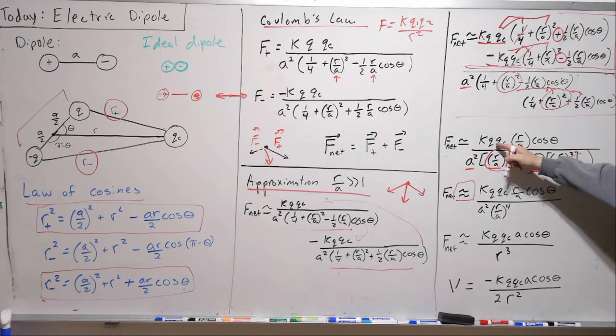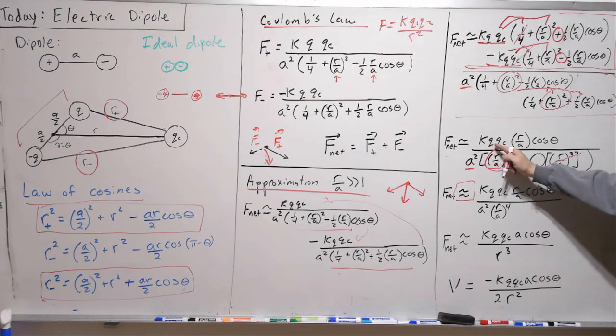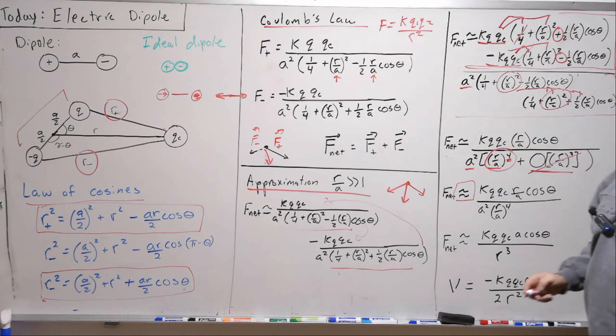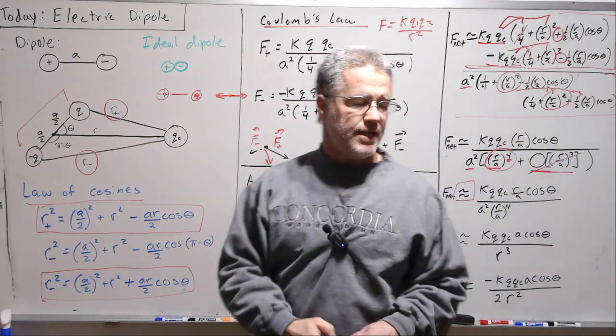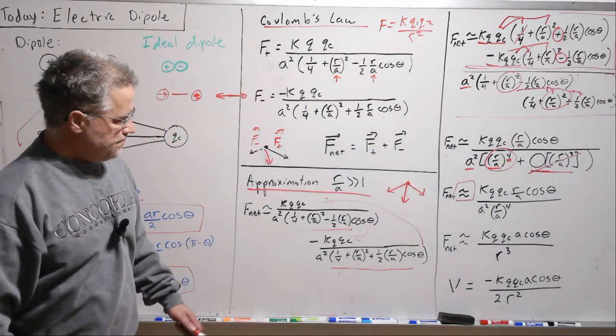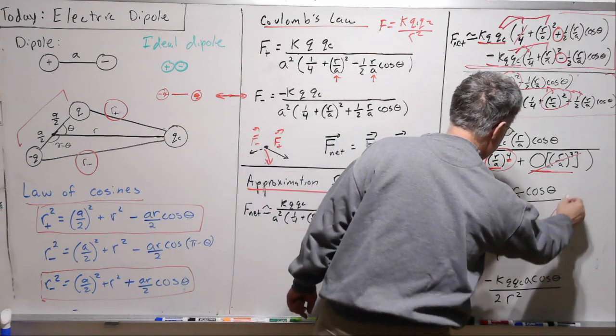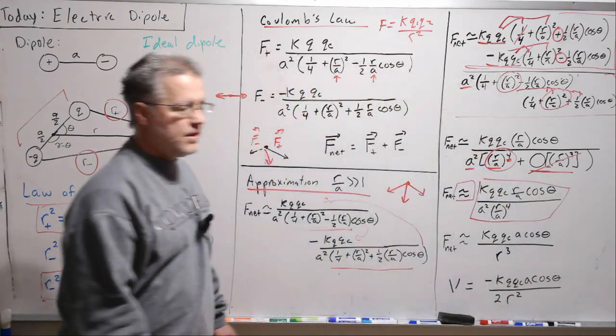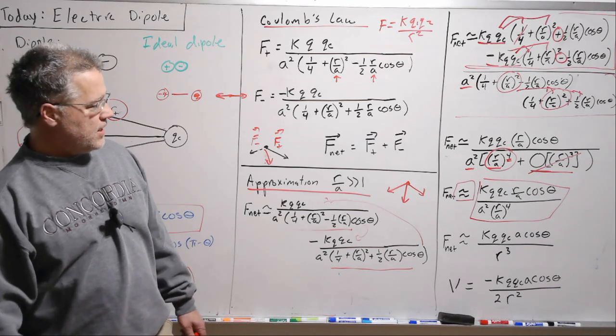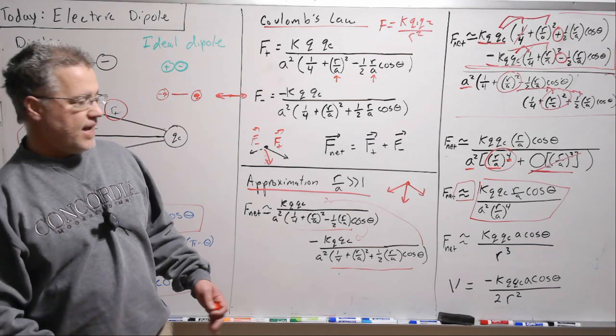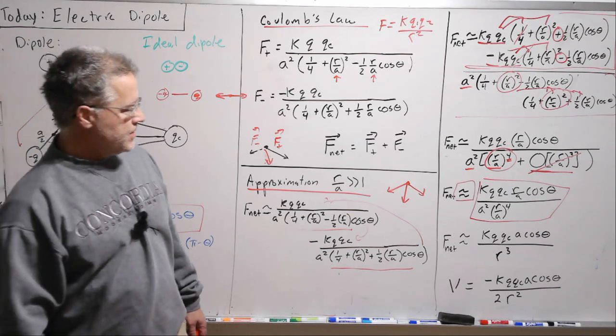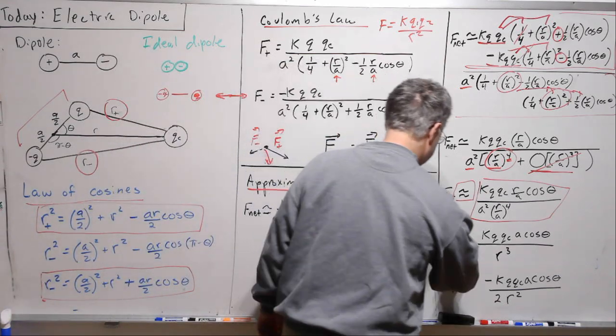But notice there is a sign change here. And so these will not cancel, but they'll actually add. So we'll have two of these. The one half will go away and we're going to get KQqC r over a cosine theta. And so that's our numerator. Well, let's clean this up now. We've got some A's we can cancel and some R's we can cancel. And this cleans all the way up.